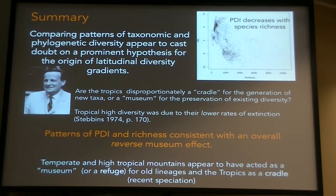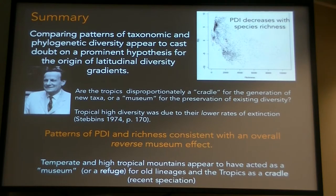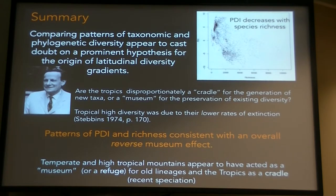For clarification: this PDI is a measure of phylogenetic diversity while controlling for the actual number of species. So for a given observed richness, you have more or less phylogenetic diversity. The museum is relatively bigger — but in the tropics, assemblages are not as phylogenetically diverse given the number of species present. Exactly.